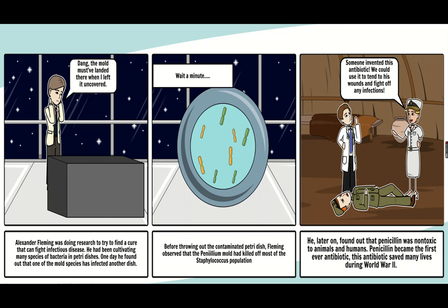Alexander Fleming was doing research to find a cure for infectious diseases. He was cultivating many species of bacteria in petri dishes. One day he went for a long vacation. When he came back, he saw that one of the petri dishes had been contaminated by a fungus called Penicillium. Before throwing it out, Fleming observed the contaminated petri dish carefully and found that Penicillium was killing most of the bacterial population growing in it. Wherever the Penicillium was growing, there was no sign of any bacteria in its surrounding. He concluded that Penicillium was secreting certain chemicals which were not allowing the bacteria to grow, as a defense mechanism.